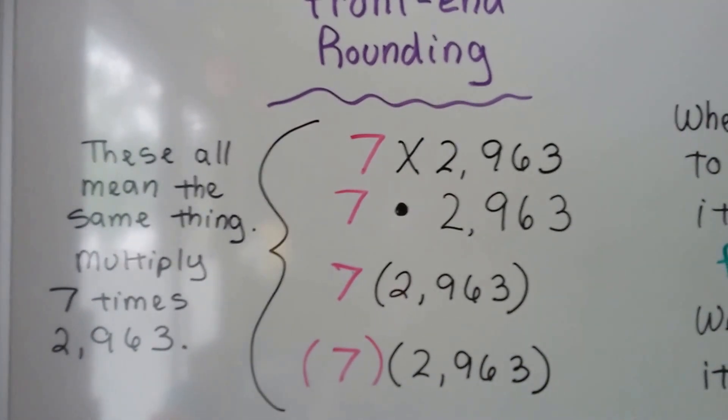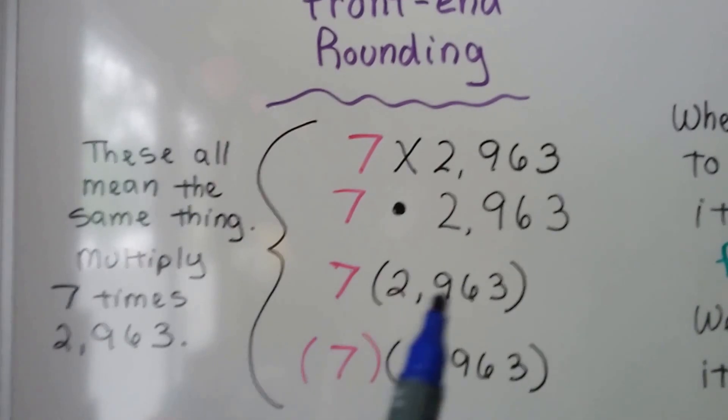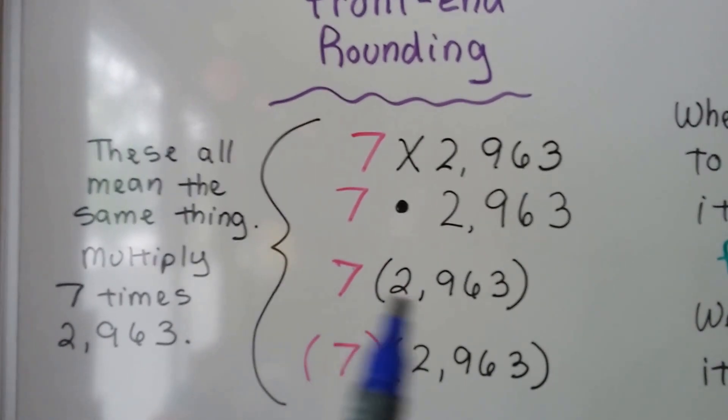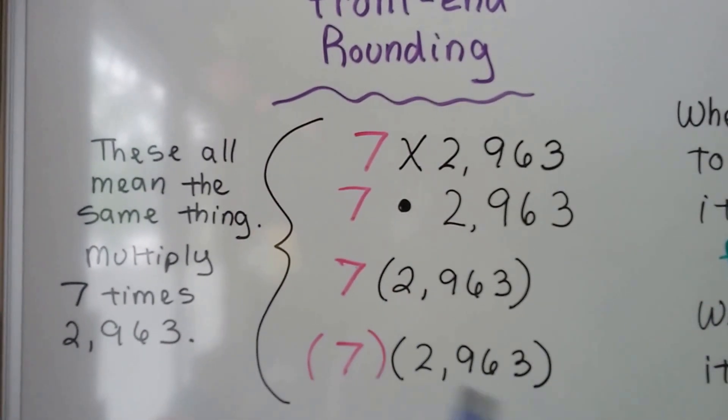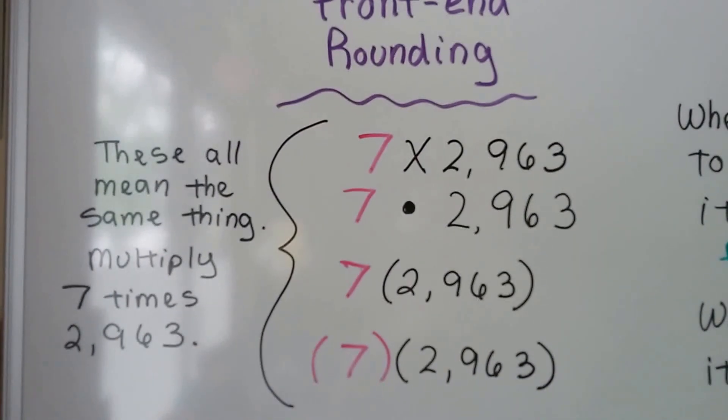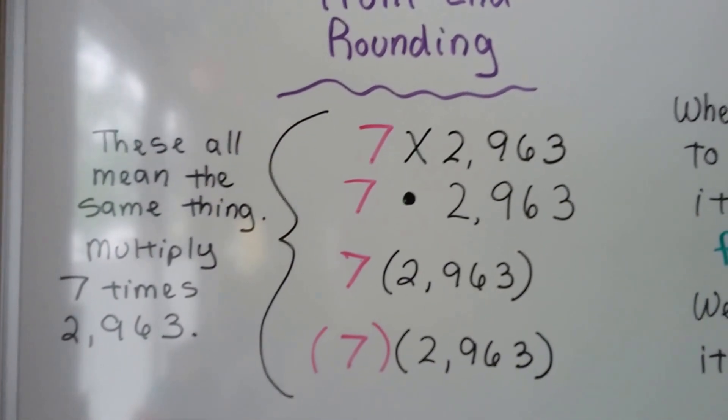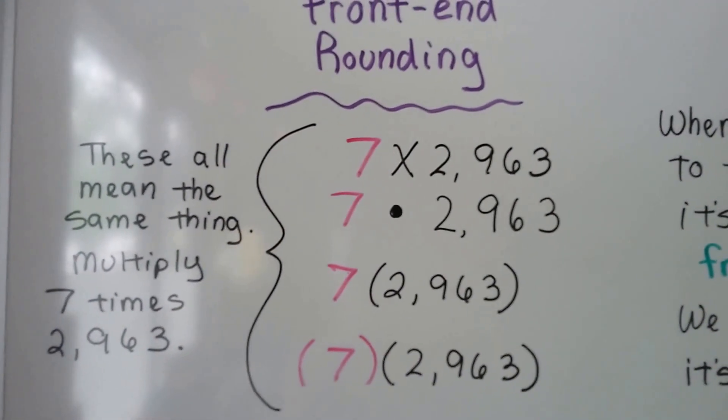7 times 2,963. We can use a dot. We can use parentheses around this number. We can use parentheses around both of them. They all mean the same thing. They mean multiply 7 times 2,963.